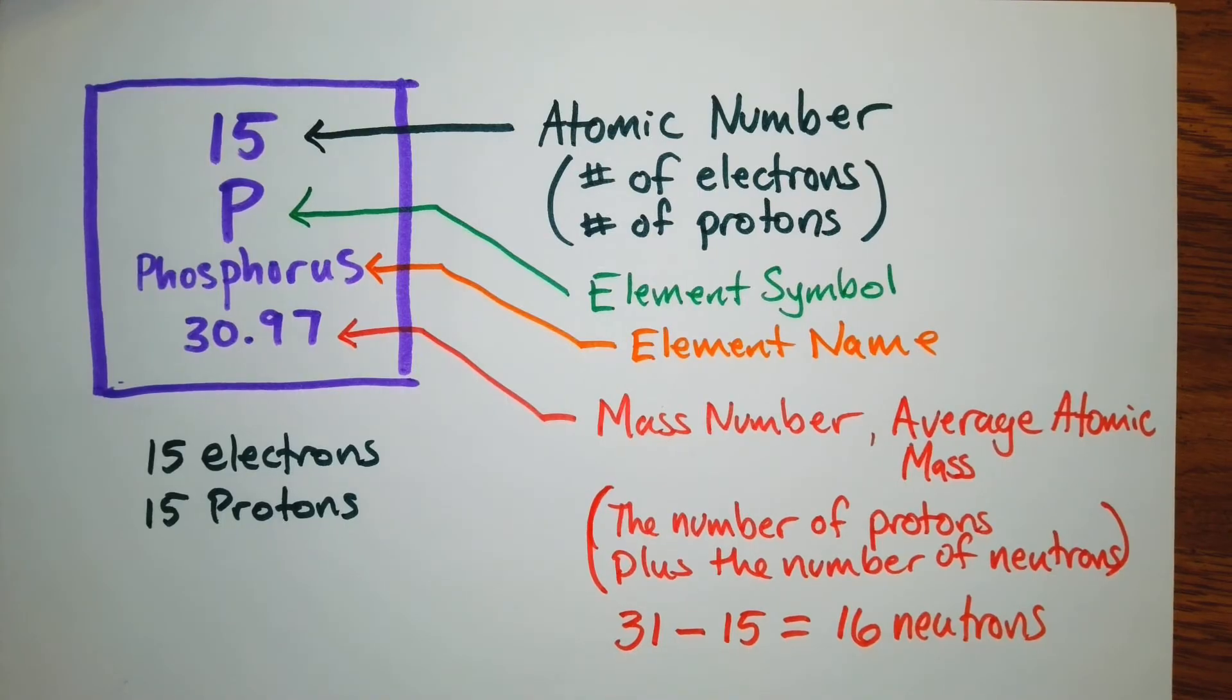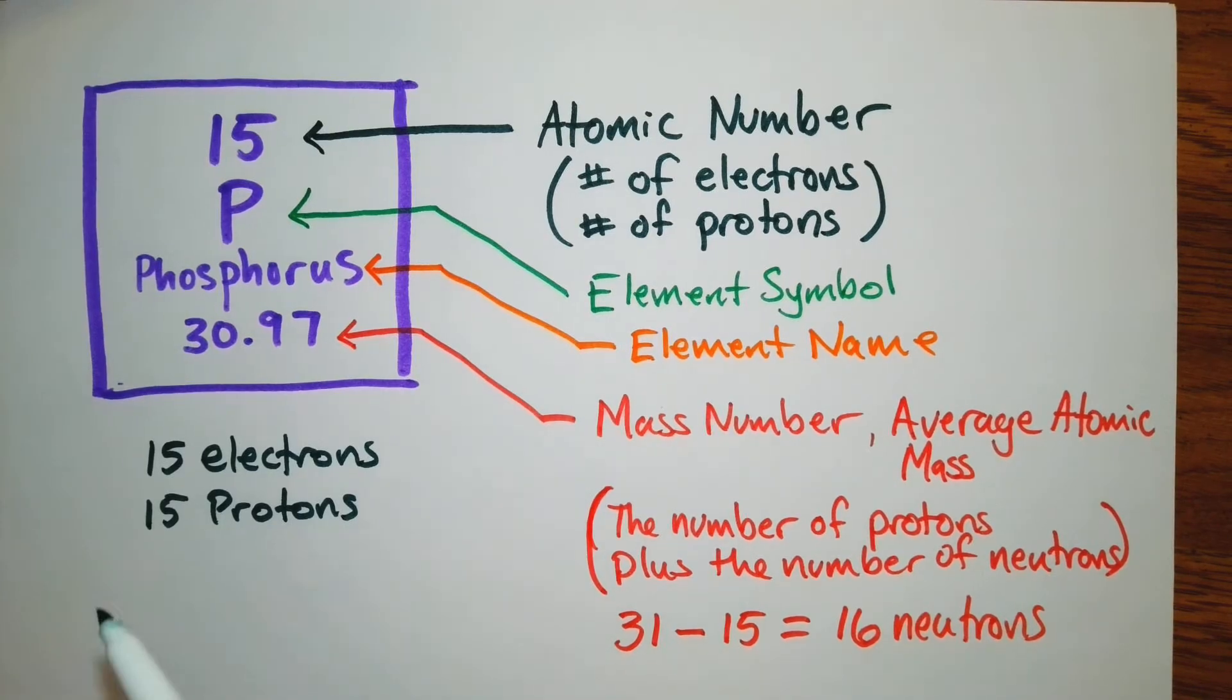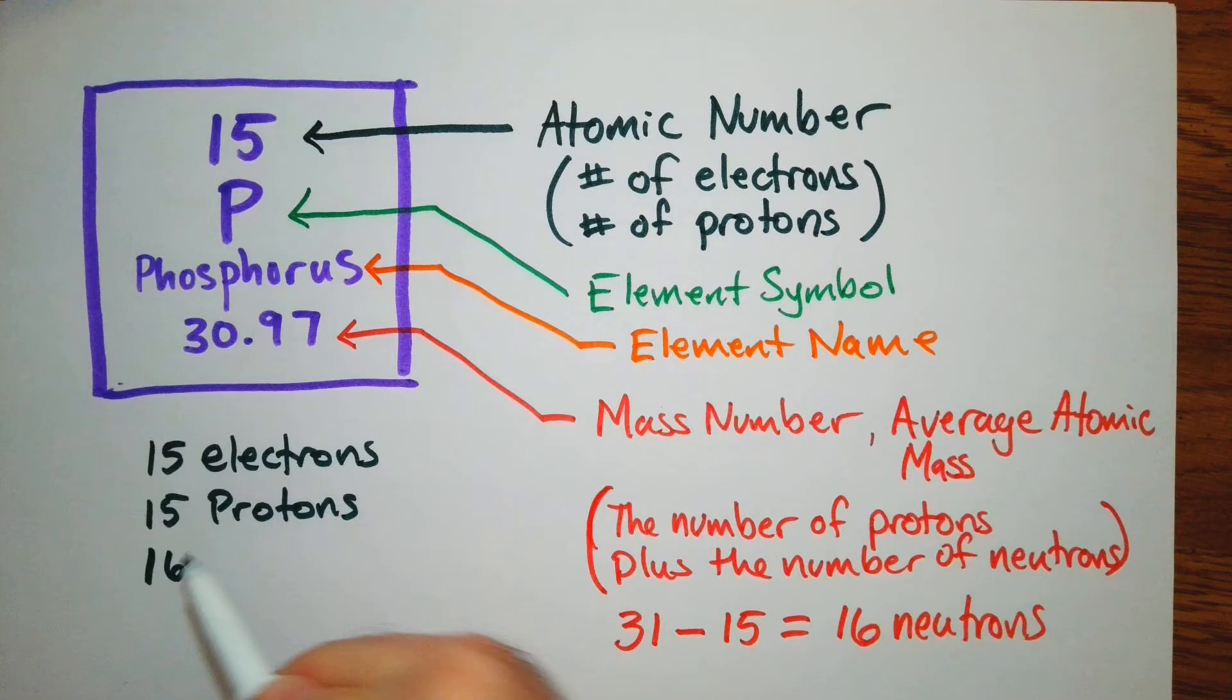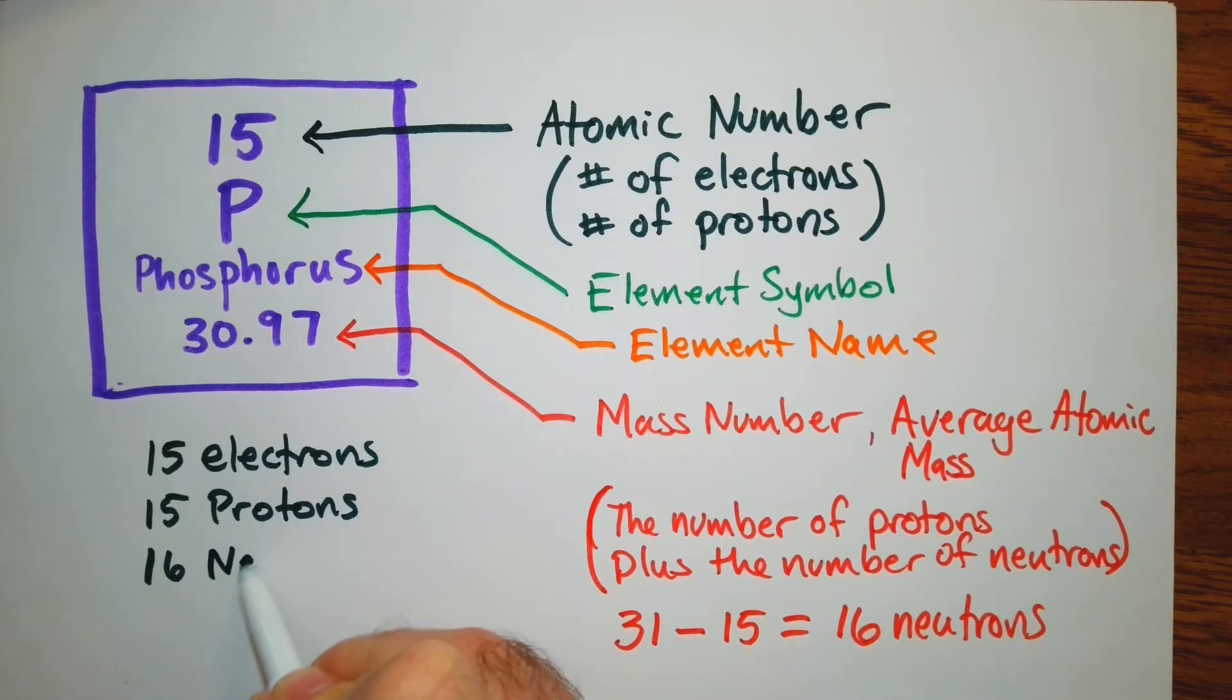So for our final answer over here, we'll have 16 neutrons. All right, pretty simple. Let's do a couple examples.